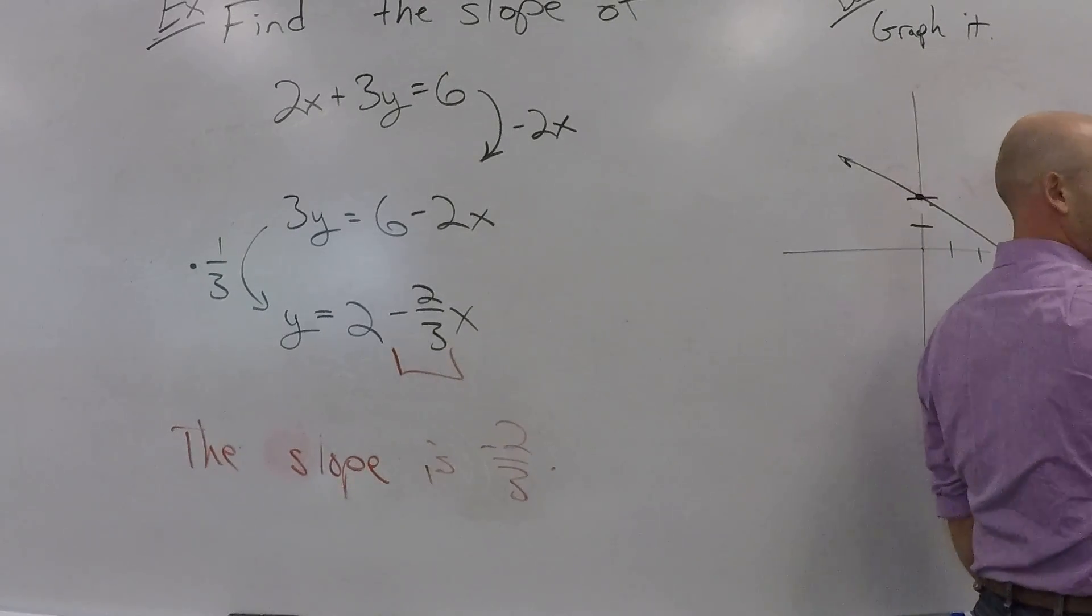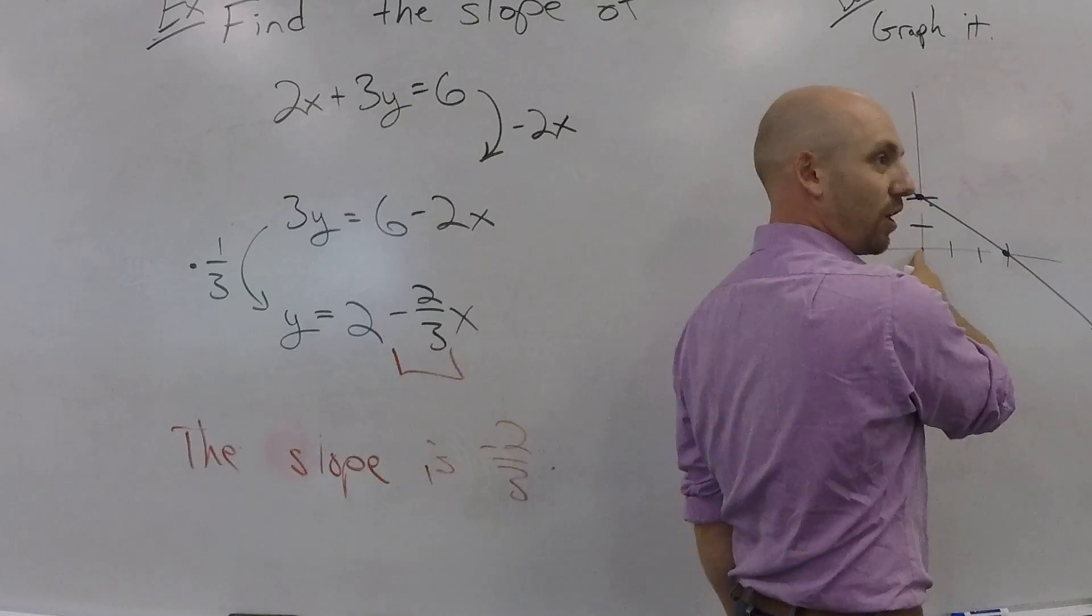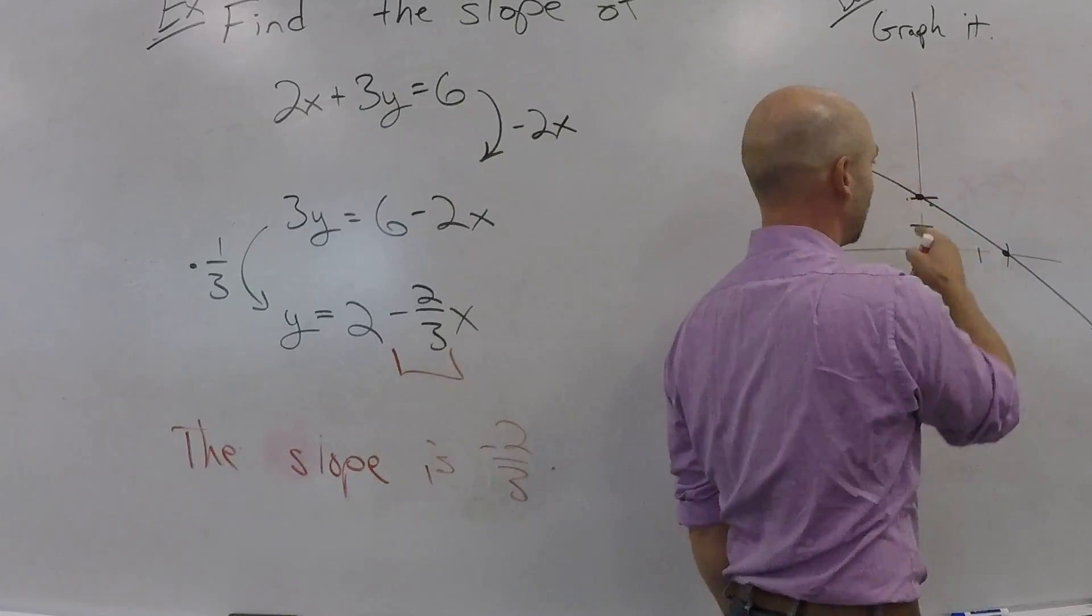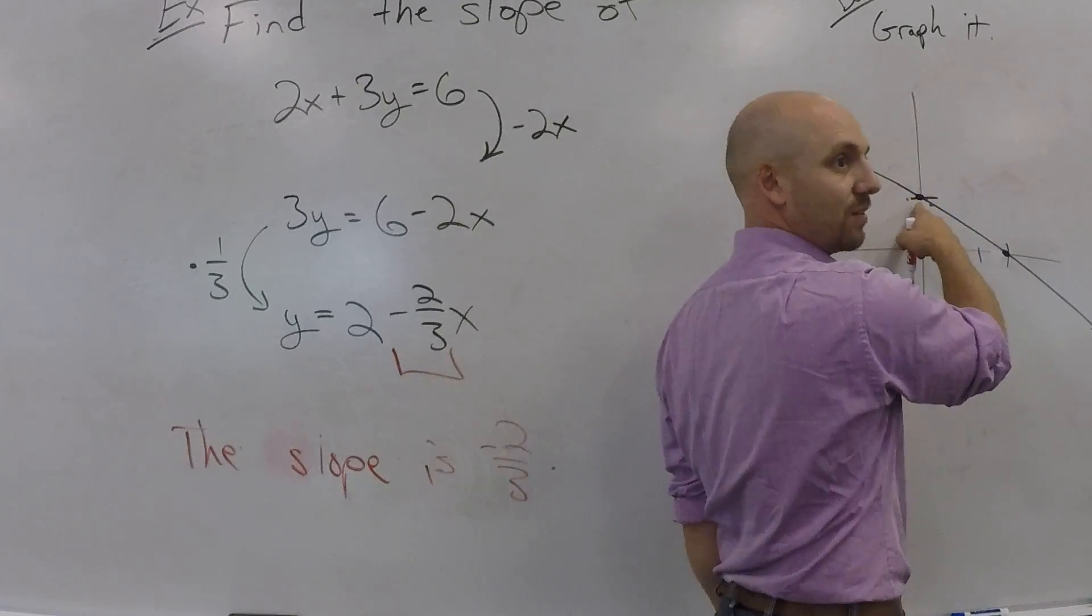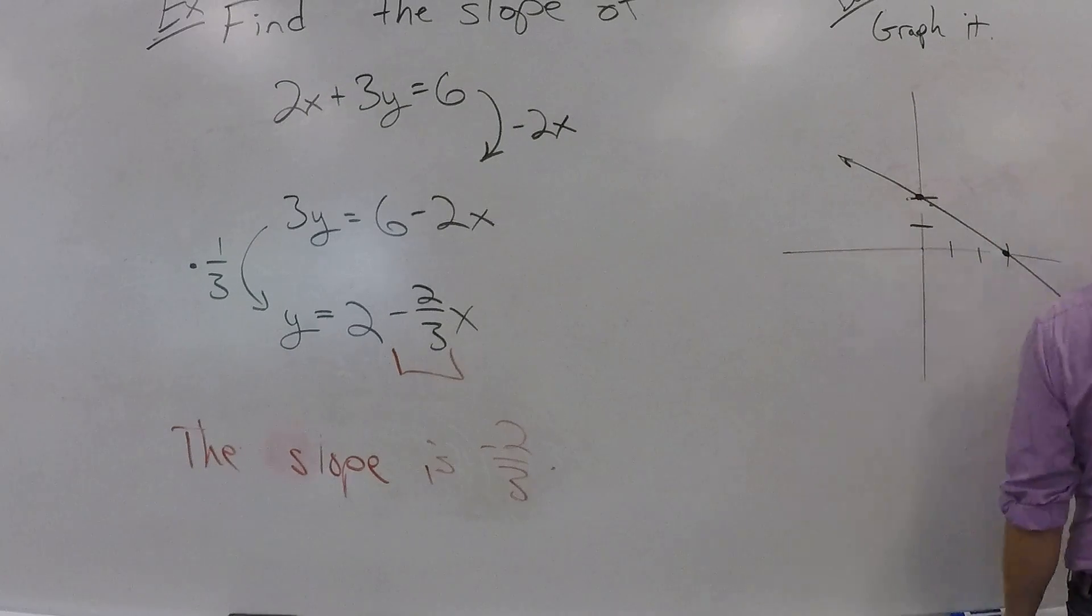So, when X is 0, Y is 2. In other words, when you go over 0, you should go up 2. That's this guy.